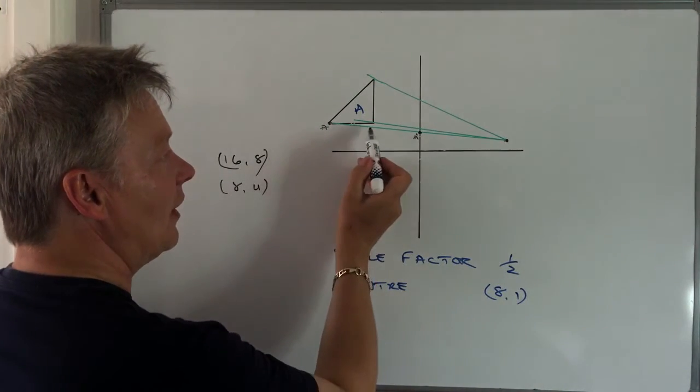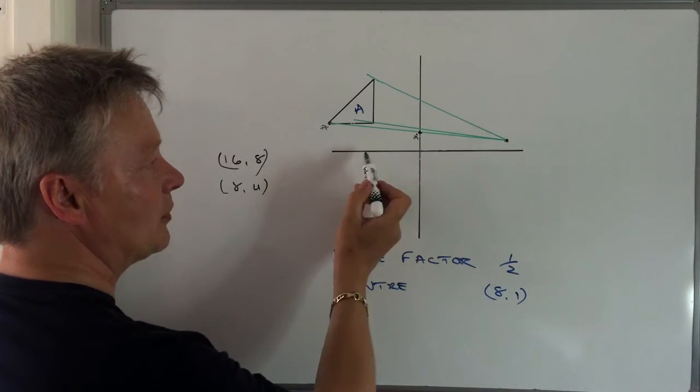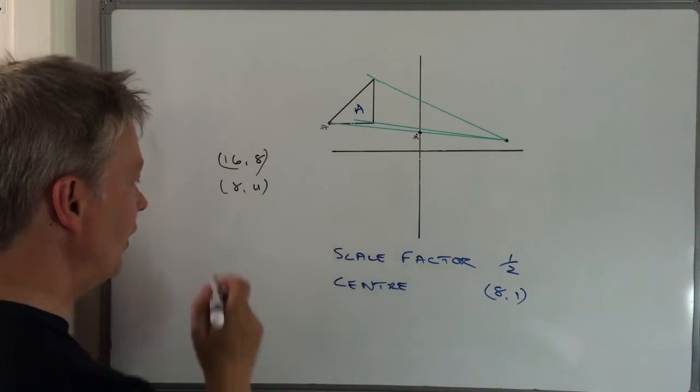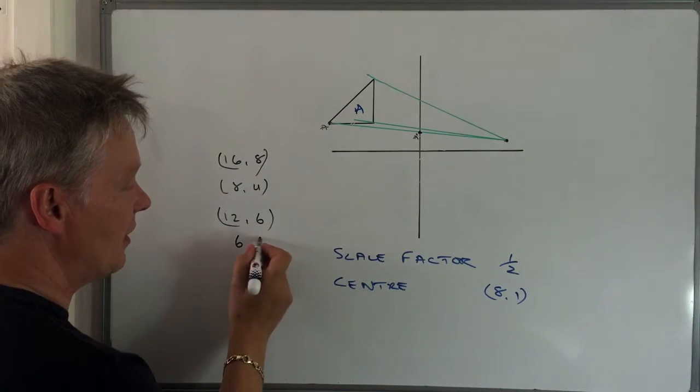Okay, so I'm going to have a look at that one there. Now let's say in this particular case, I've gone along 12 and I've gone up 6. Well, if I've gone along 12 and up 6,